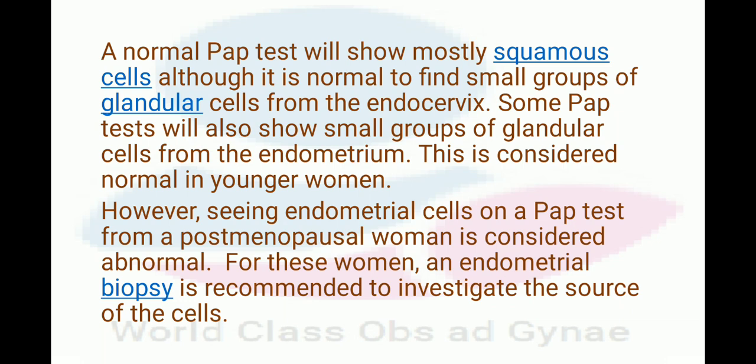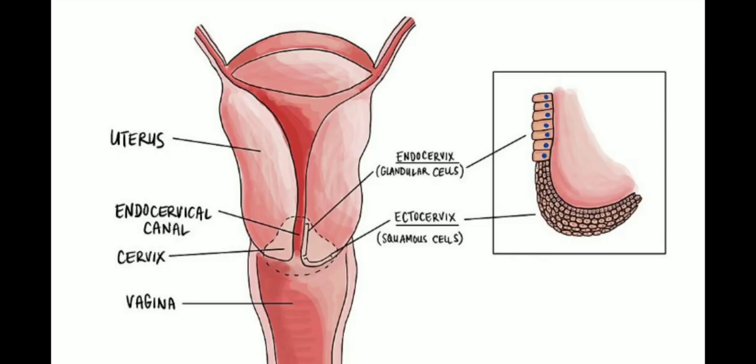This is considered normal in younger women. However, seeing endometrial cells on a pap test from a postmenopausal woman is considered abnormal, and an endometrial biopsy is recommended to investigate the source of cells. So the first thing we have learned is that we have to do an endometrial biopsy.